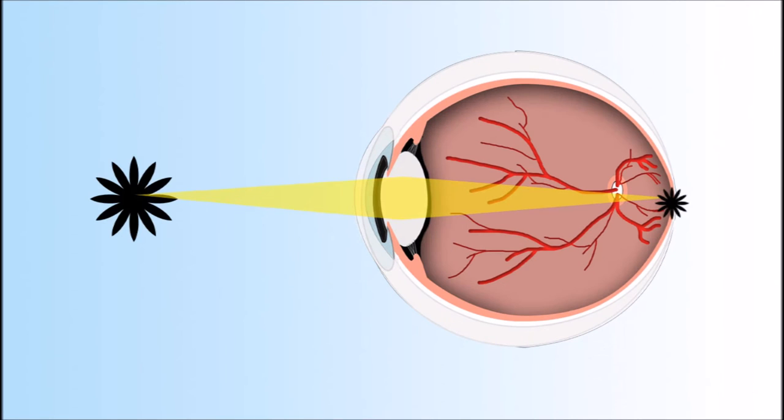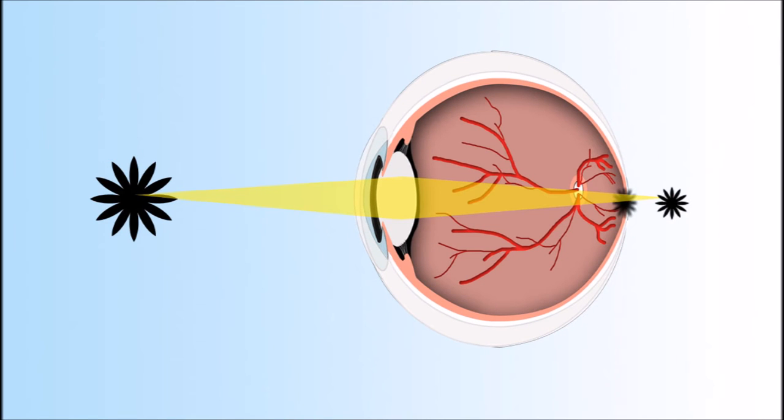In a hyperopic patient, the eye is too short. This leaves a blurry image on the retina. Other factors that contribute to this effect are a cornea that is too flat and a lens that is not strong enough.